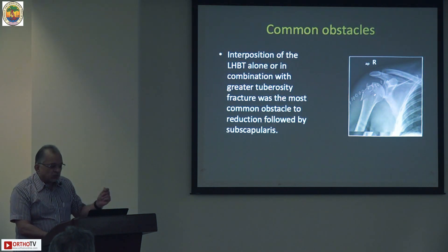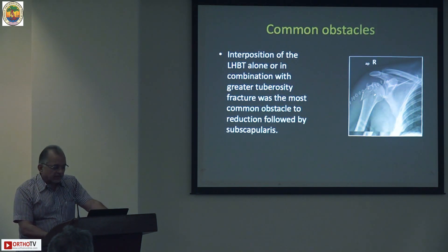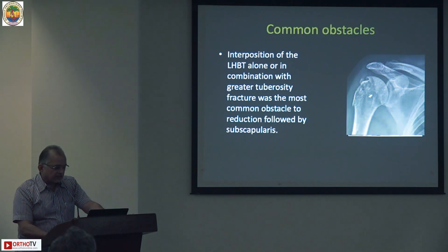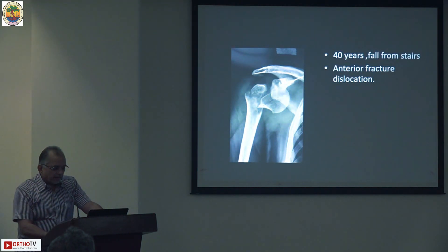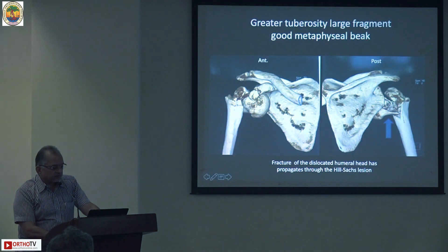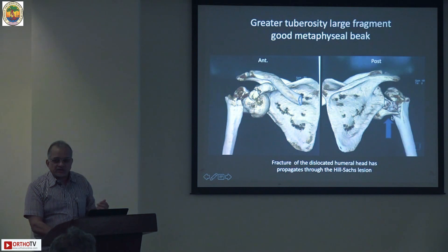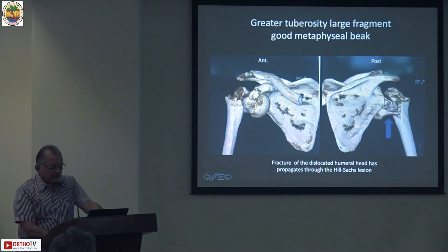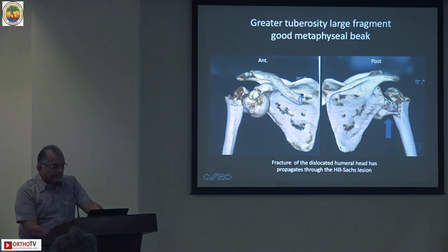Once you do a tenotomy, then you can suture after reduction of the humeral head - the tuberosity can be fixed either by various methods or by a plate. Here is a case: a 40-year-old individual who had a fall from stairs had an anterior fracture dislocation. You can see he has a long spike on the medial side, as is typical of anterior fracture dislocation in a young individual.